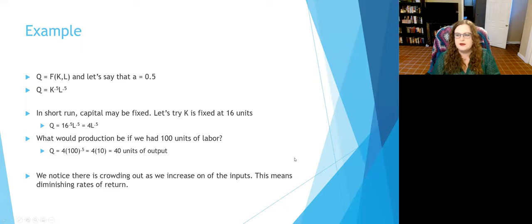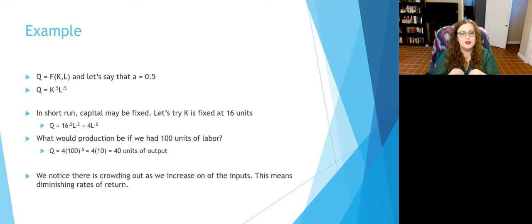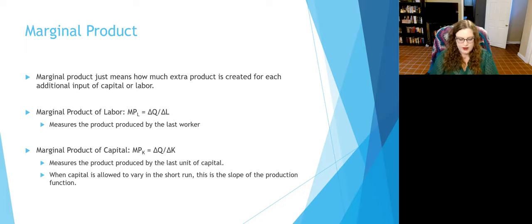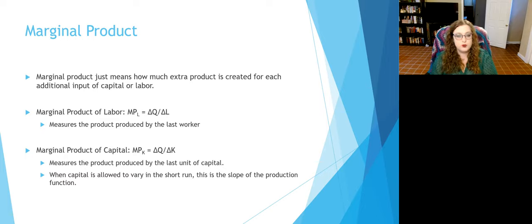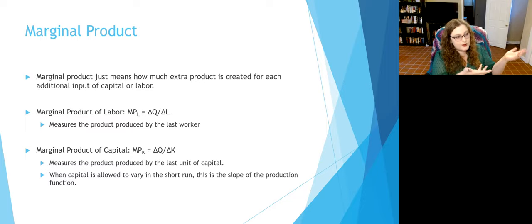If we have 10, 12, or 15 workers but a fixed building size, each additional person shoved in there isn't helping make all that many more donuts. So if we have one unit fixed, there are going to be decreasing returns from increasing the other input. In our case, capital — the number of machines — is fixed, making it difficult to keep scaling up. The key measure here is the marginal product of labor: the additional amount of output for each extra unit of input.